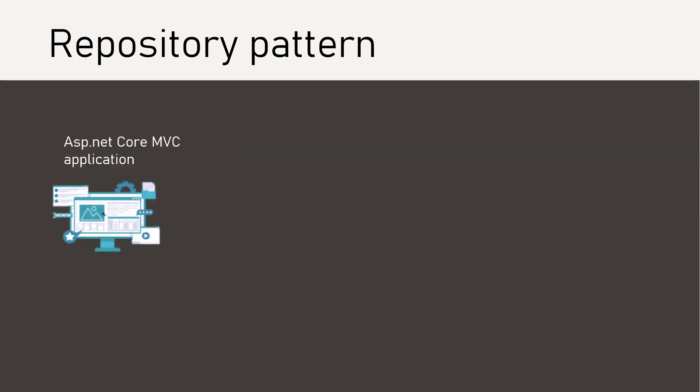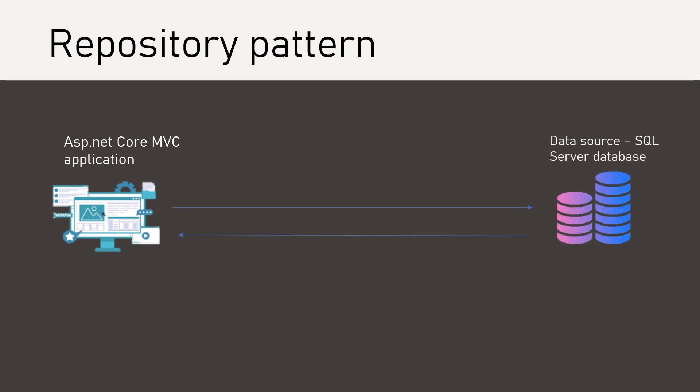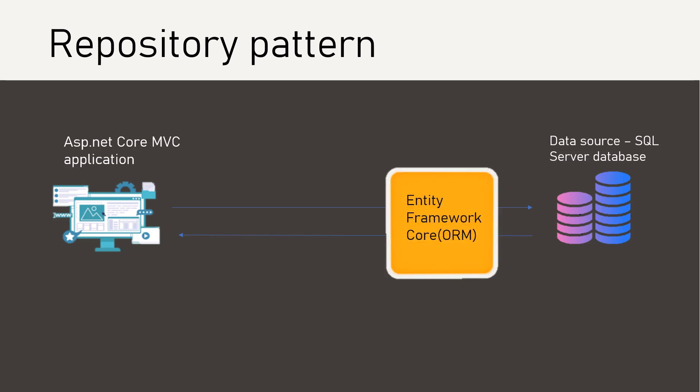Let's take an example of our application. We are working on an ASP.NET Core MVC application and building an Employee Records Management System. We have decided that SQL Server is going to be our database to store data. SQL Server is our data source. If we want to interact with the database, we have to write SQL queries. To make the process easier, we have decided to use an ORM — Entity Framework Core — so that we don't have to write SQL queries. We can write C# queries to work with the database.